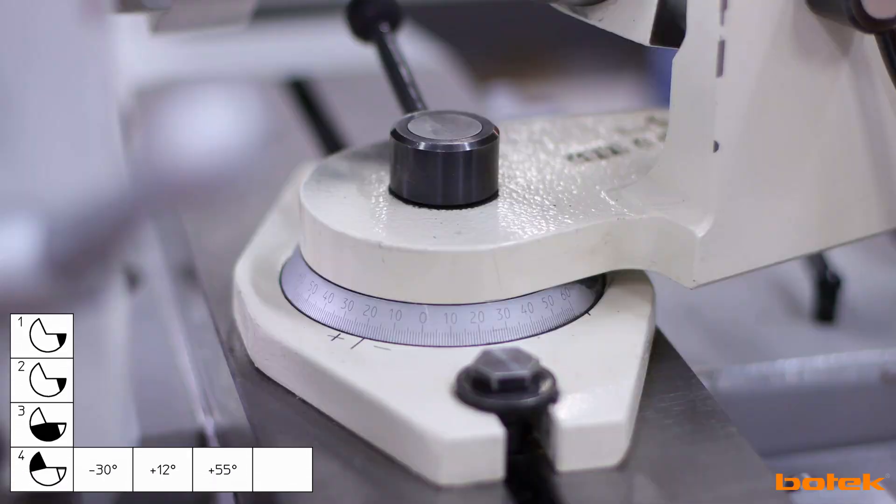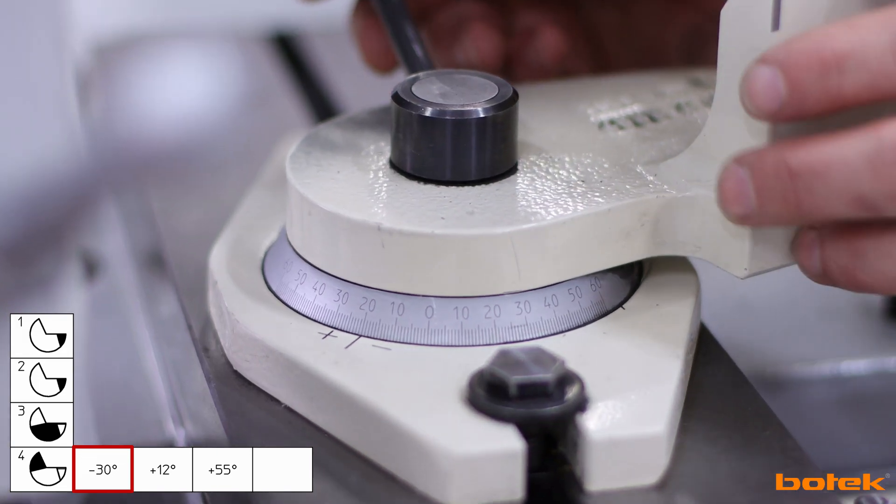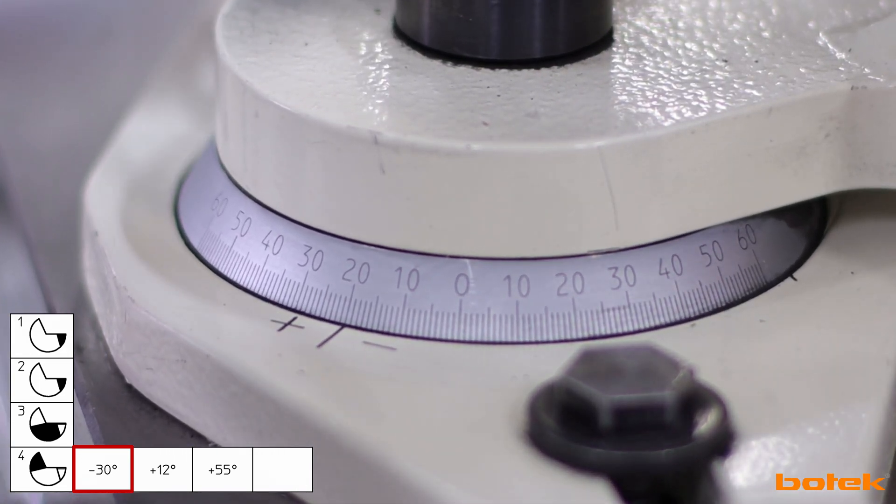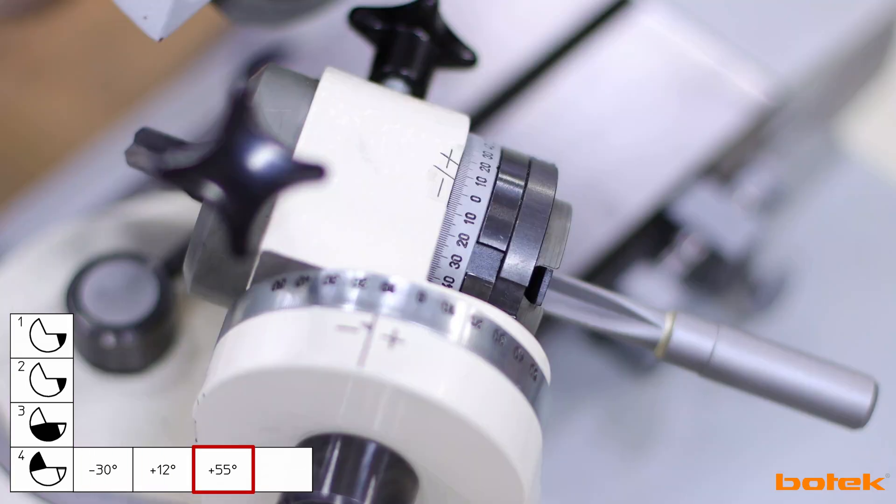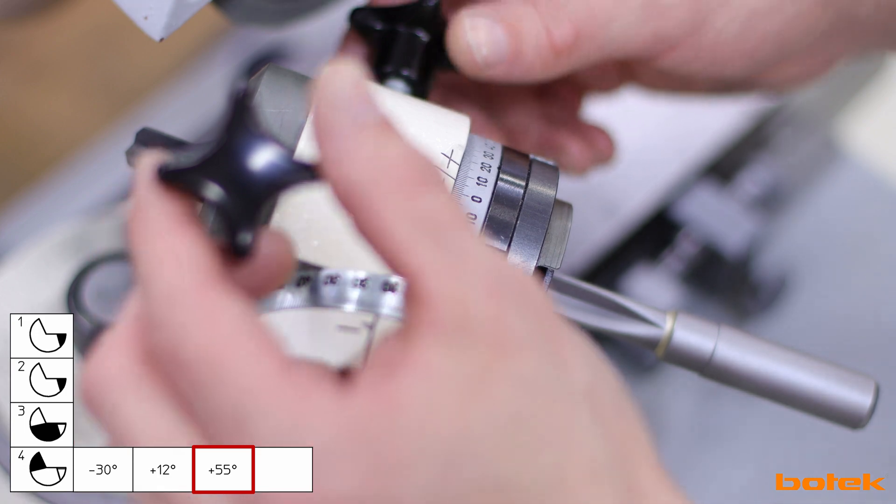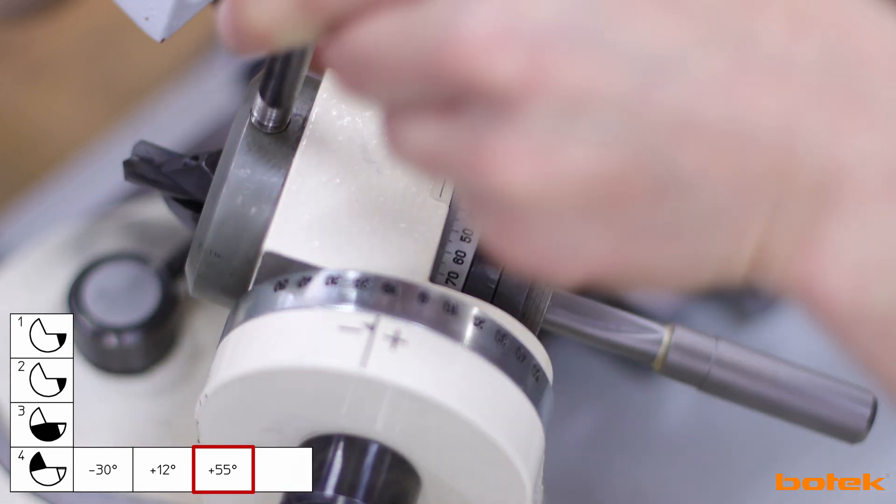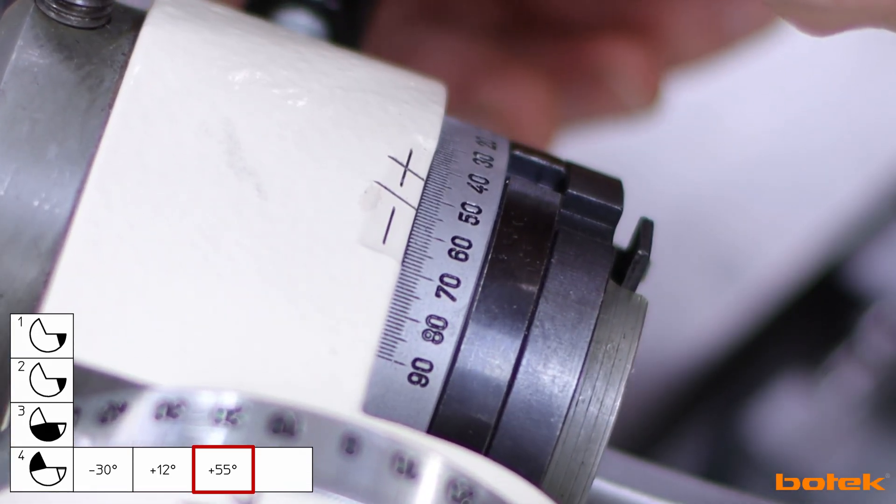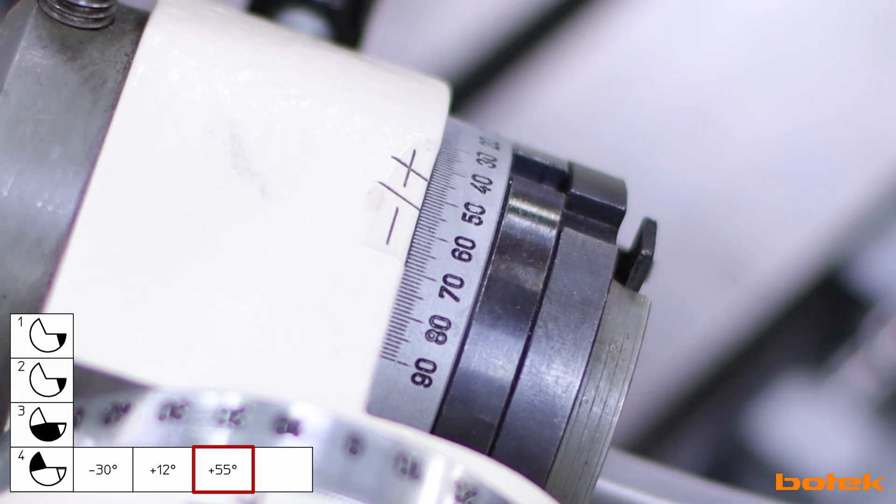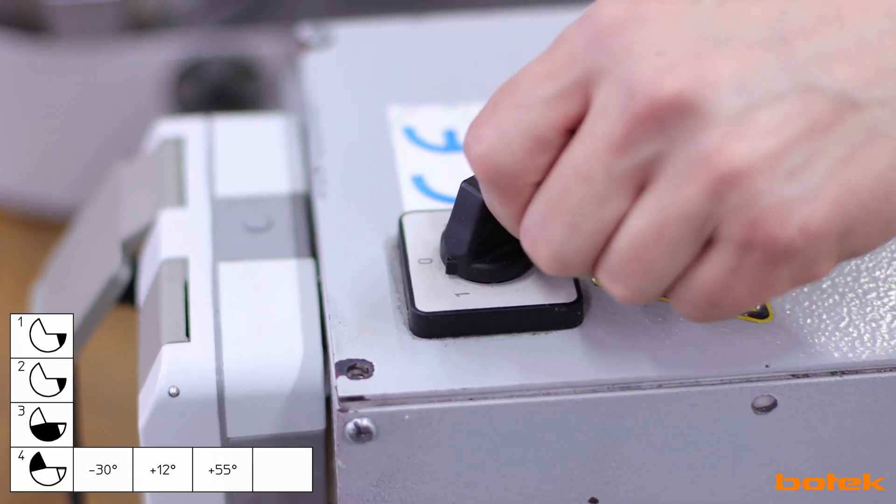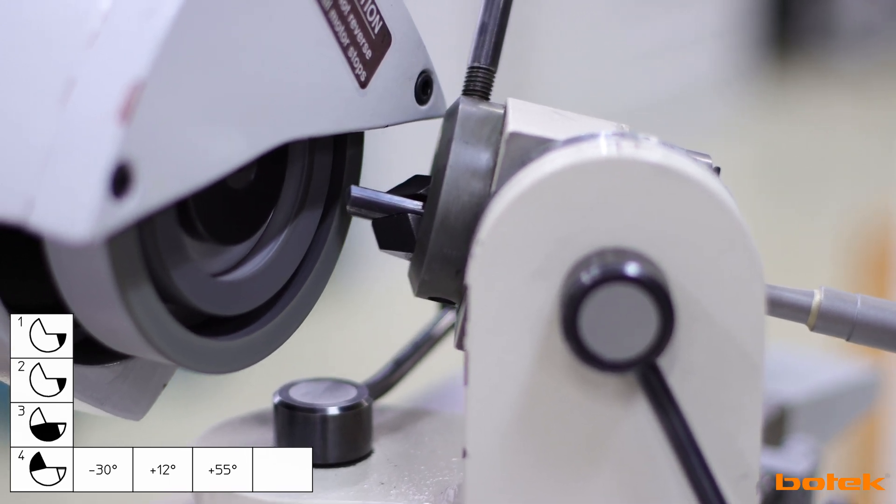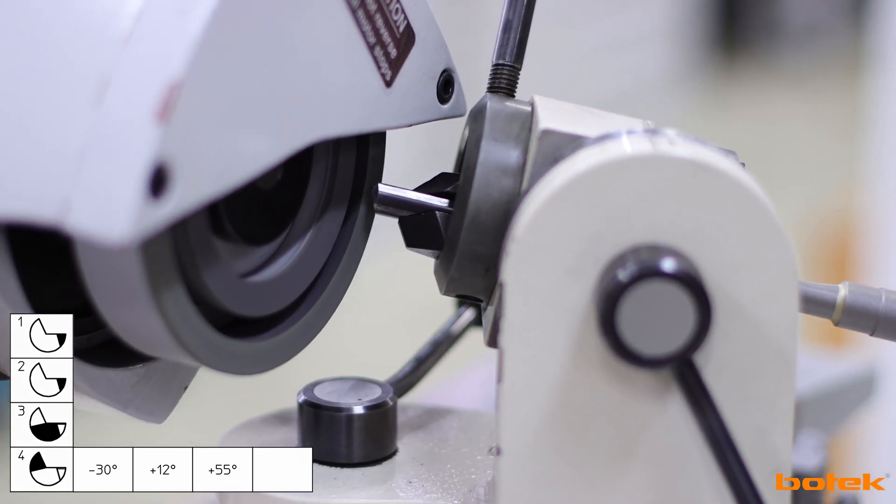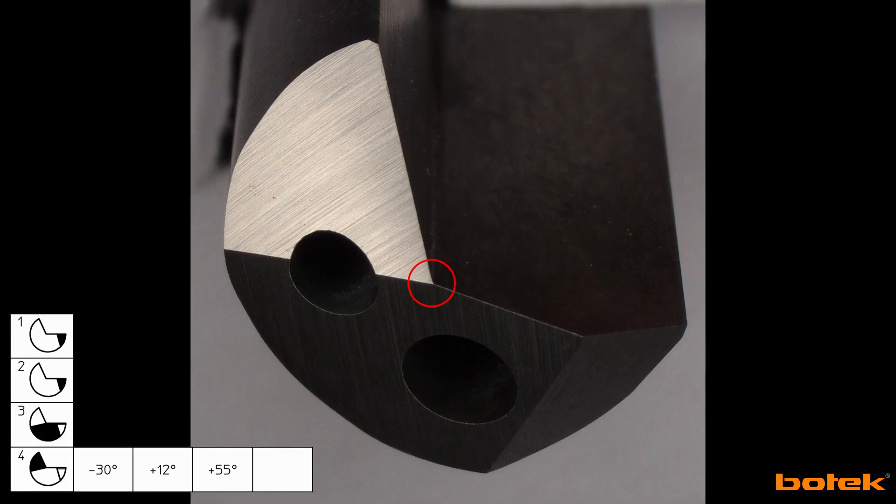To grind the oil chamber next set the swivel angle to minus 30 degrees. Maintain the tilt angle and set the twist angle to plus 55 degrees. With the machine switched off the direction of rotation is now changed. Start the engine. Now grind the oil chamber surface to the intersection of the half surface.